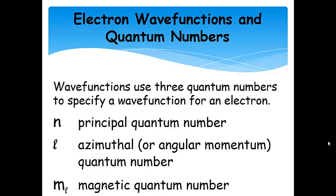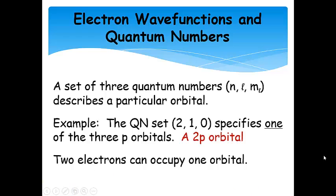N is called the principal quantum number. L is called either the azimuthal or sometimes the angular momentum quantum number. And M sub L — that's M with a subscript L — is called the magnetic quantum number.